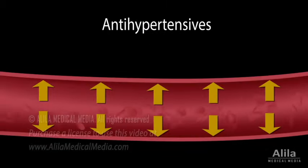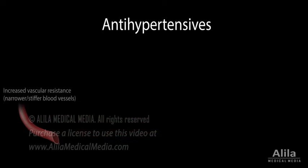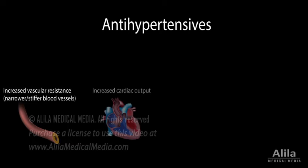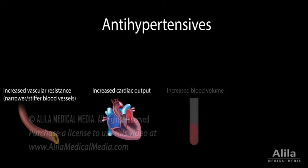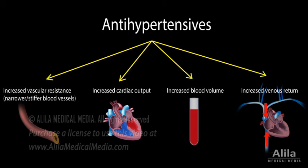Hypertension is most commonly associated with an increase in vascular resistance caused by narrower or stiffer blood vessels, but other mechanisms including increased cardiac output, large blood volume, or excess venous return are possible. These factors are the targets of antihypertensive agents, which can be grouped into several categories.